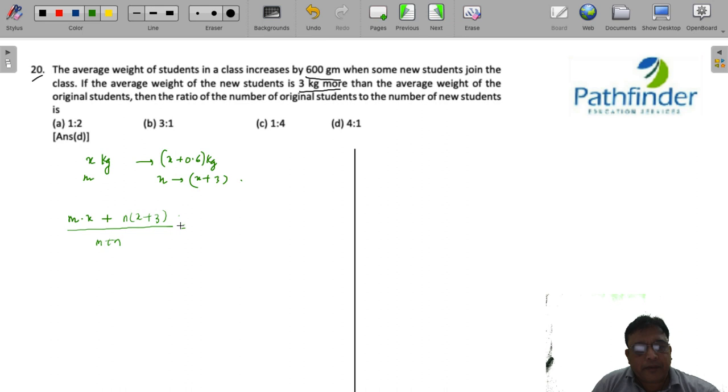All you need to do is solve for m and n. So you have mx plus nx plus 3n equals mx plus nx plus 0.6m plus 0.6n.